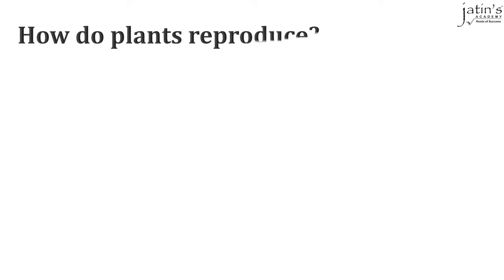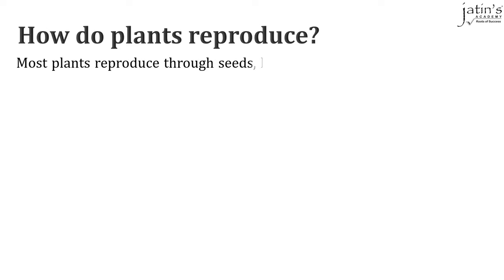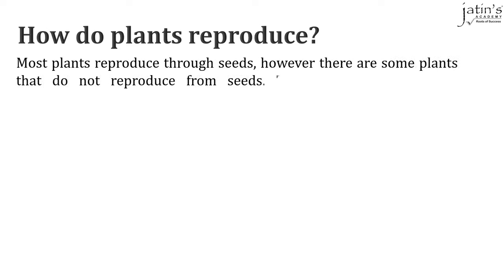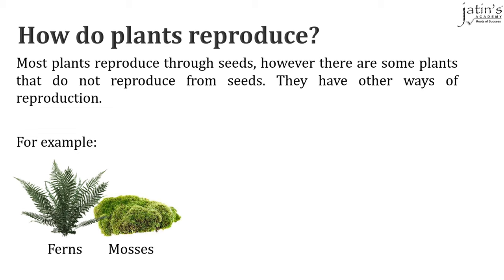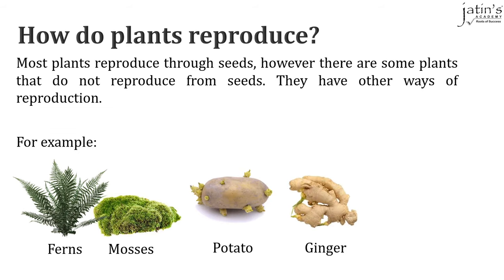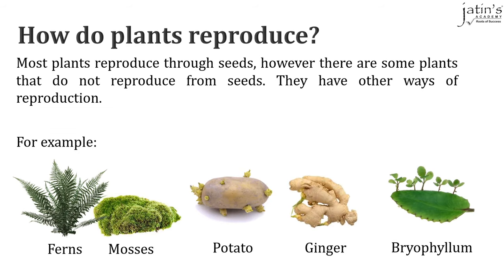The next question is how do plants reproduce? Most plants reproduce through seeds, however there are some plants that do not reproduce from seeds. They have other ways of reproduction. Such plants are mostly non-flowering — for example ferns and mosses, potato and ginger, and bryophyllum.